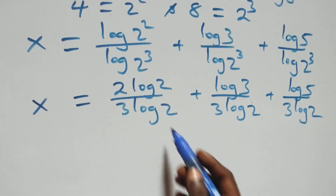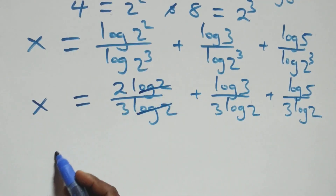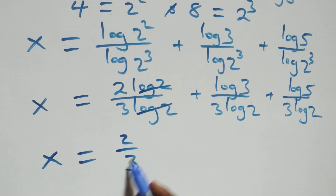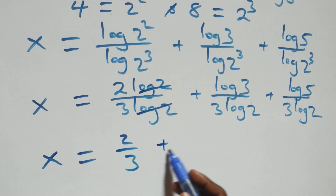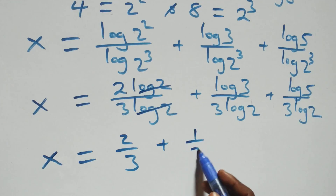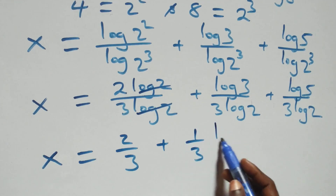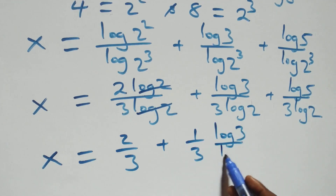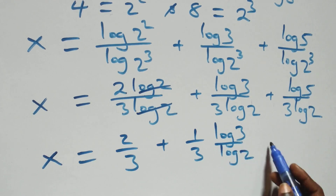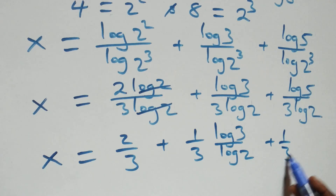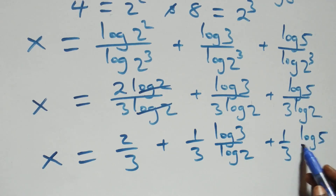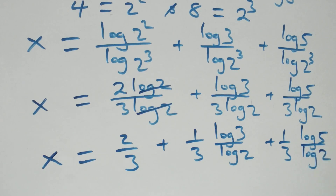Here, log 2 and log 2 cancel each other in the first fraction, so this becomes x equals to 2 over 3 plus 1 over 3 multiplied by log 3 over log 2, plus 1 over 3 multiplied by log 5 over log 2.